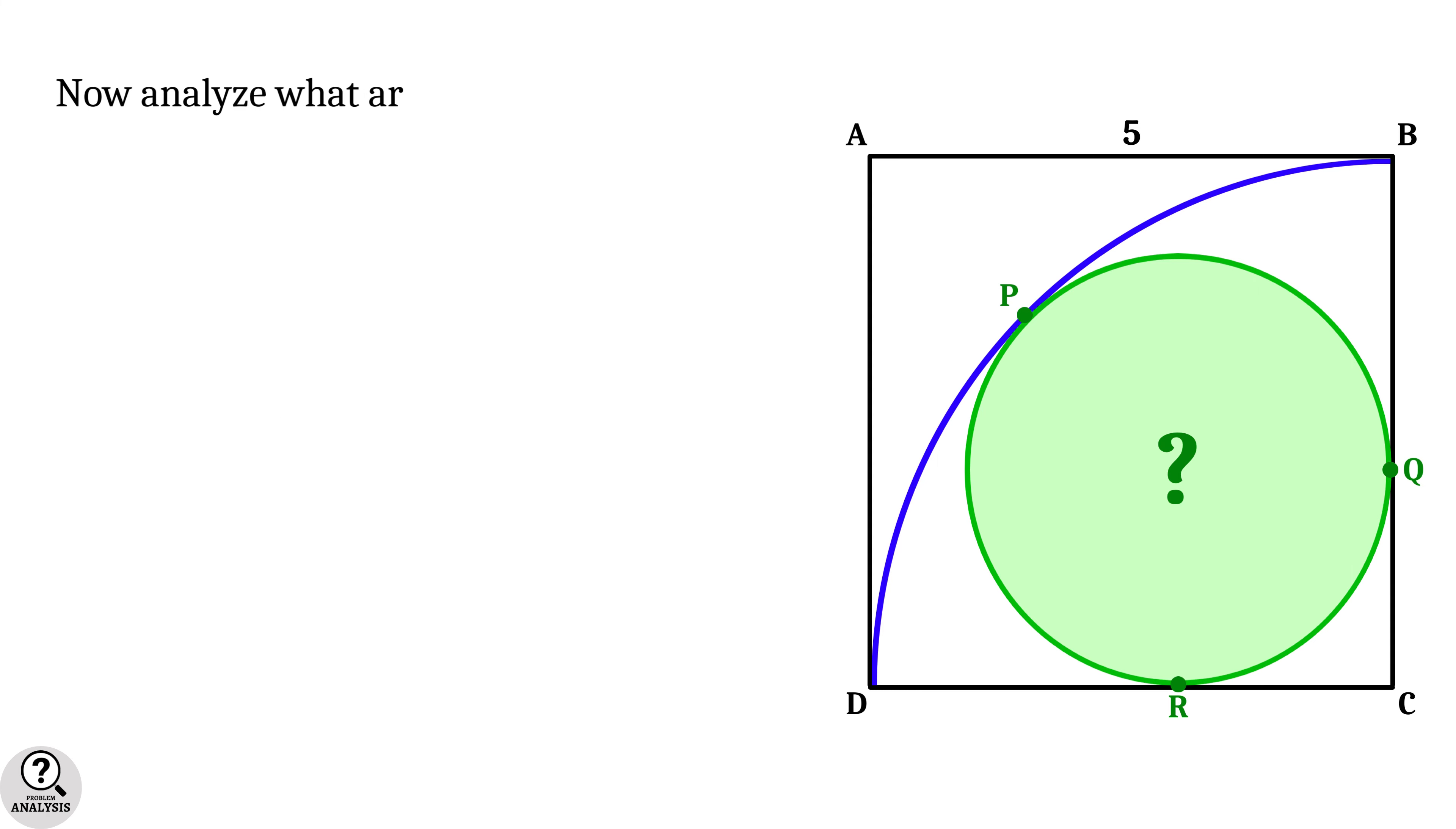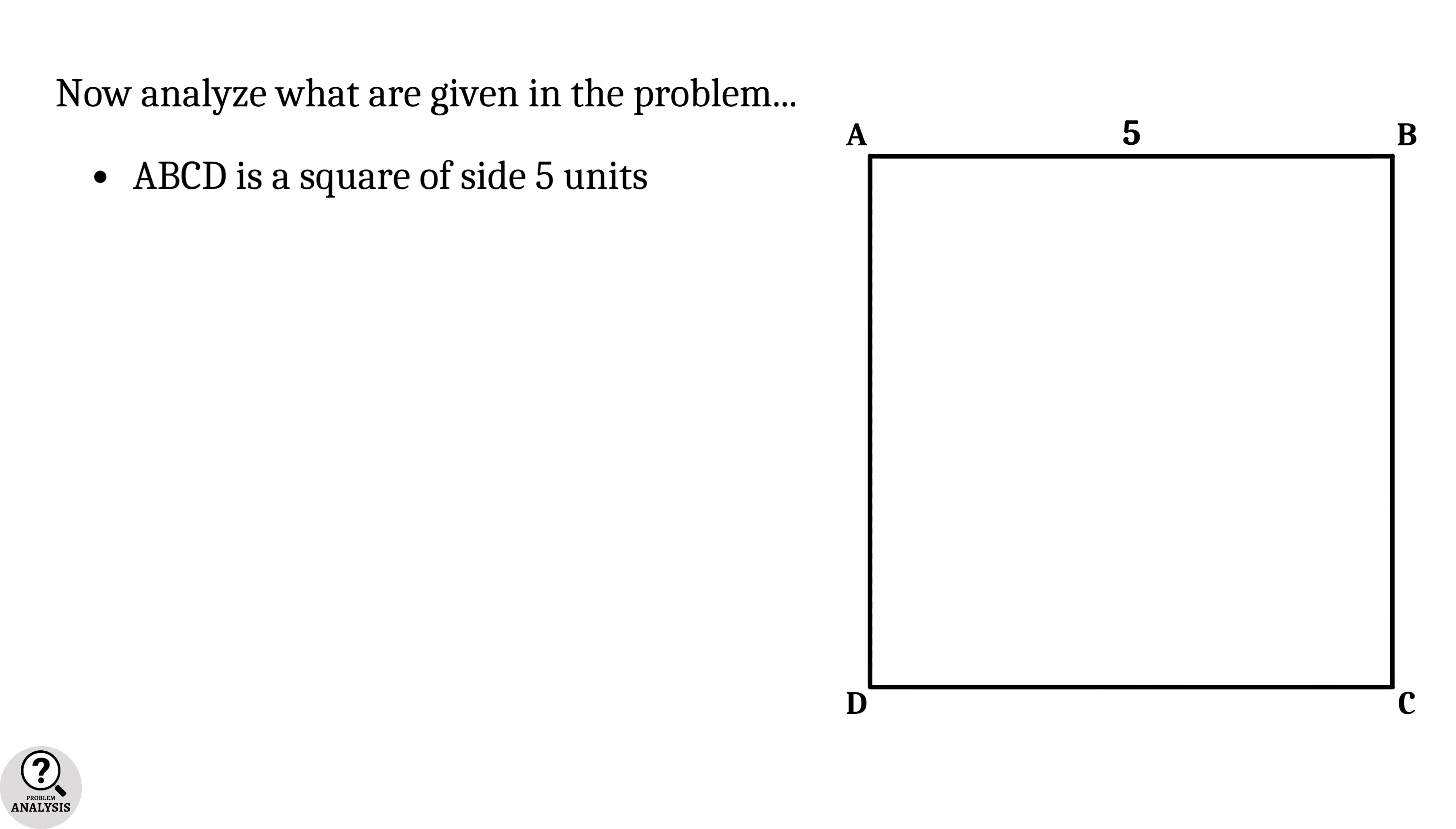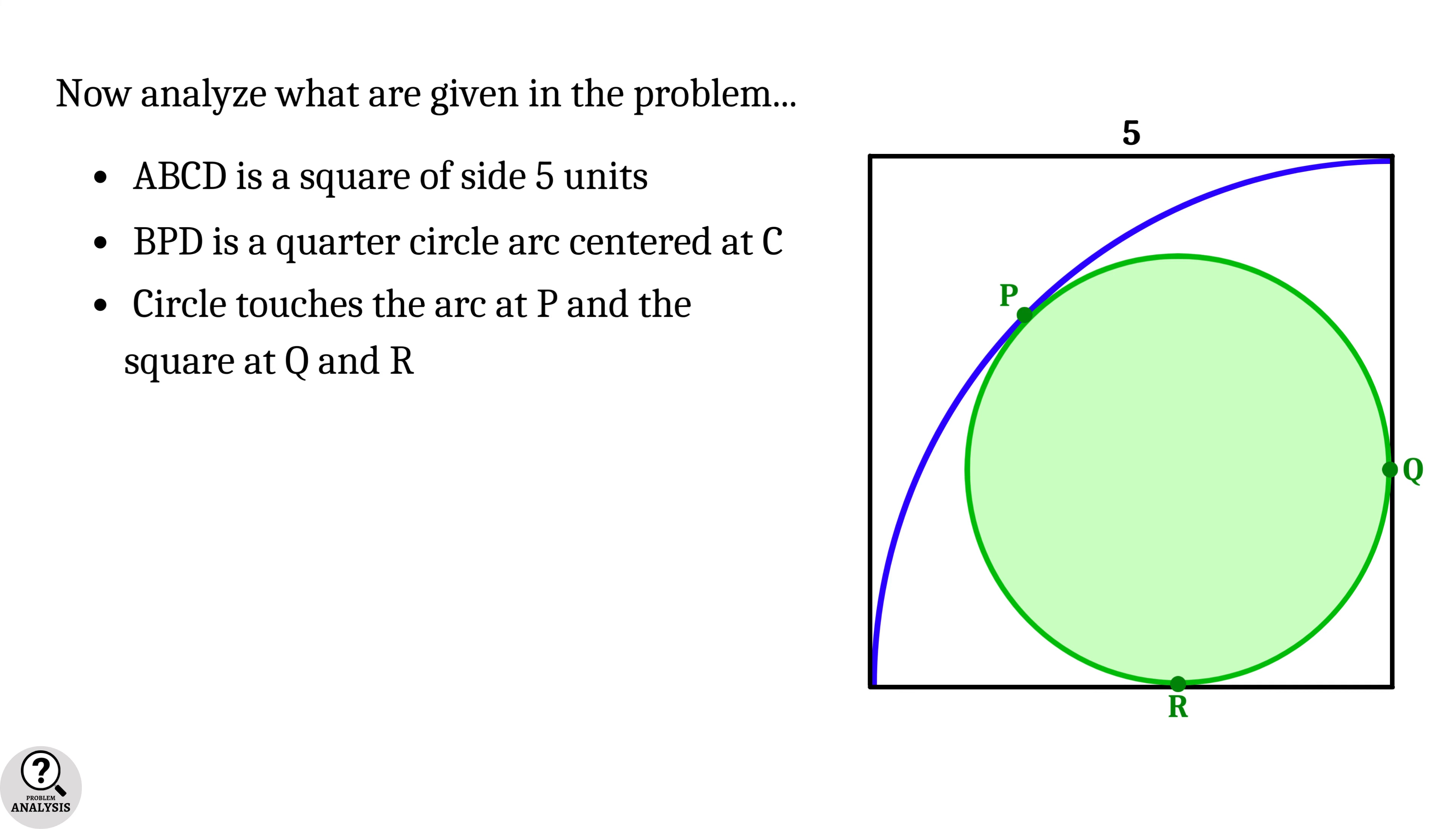Now, let's analyze what are given in the problem. First of all, ABCD is a square of side length 5 units. Secondly, the arc BPD is a quarter circle arc centered at C. And finally, the circle touches the arc at P and the square at Q and R.